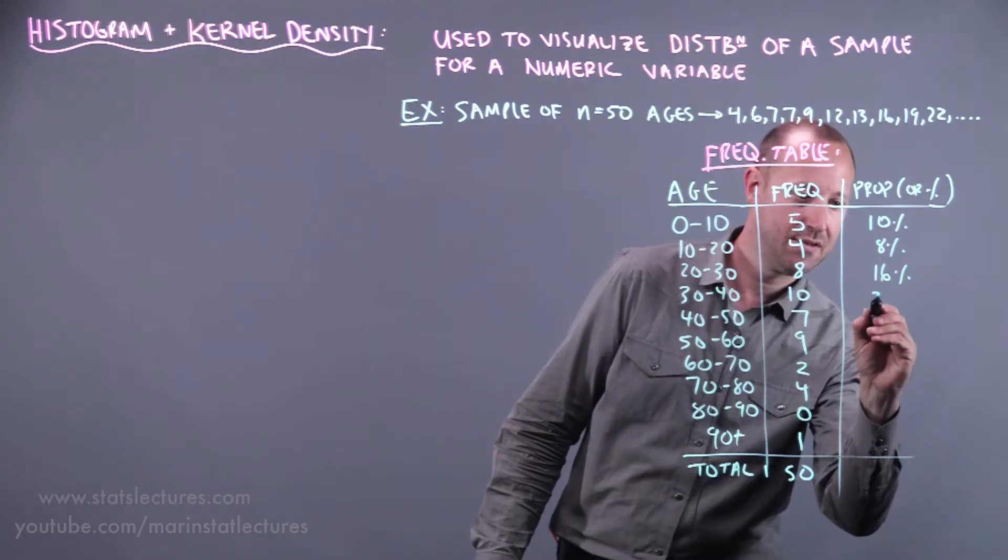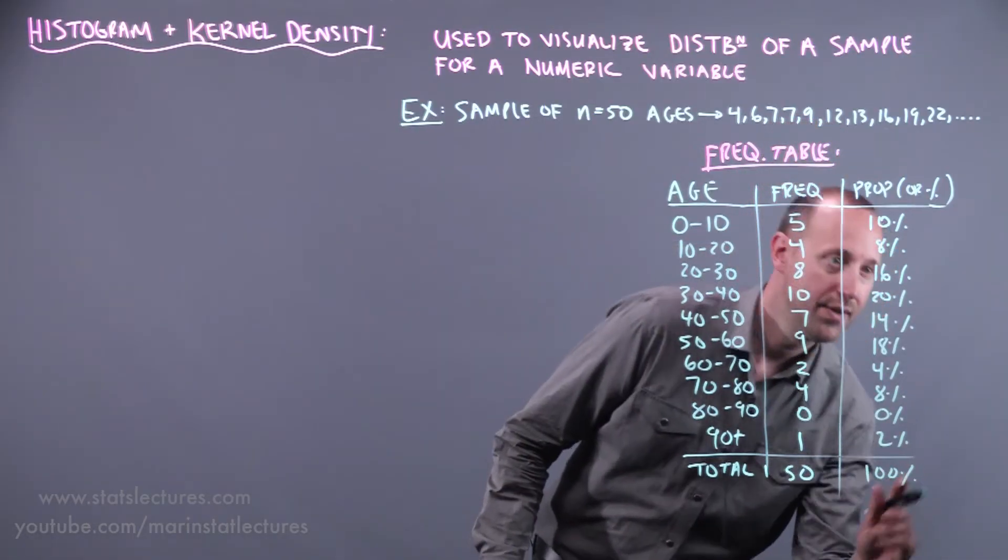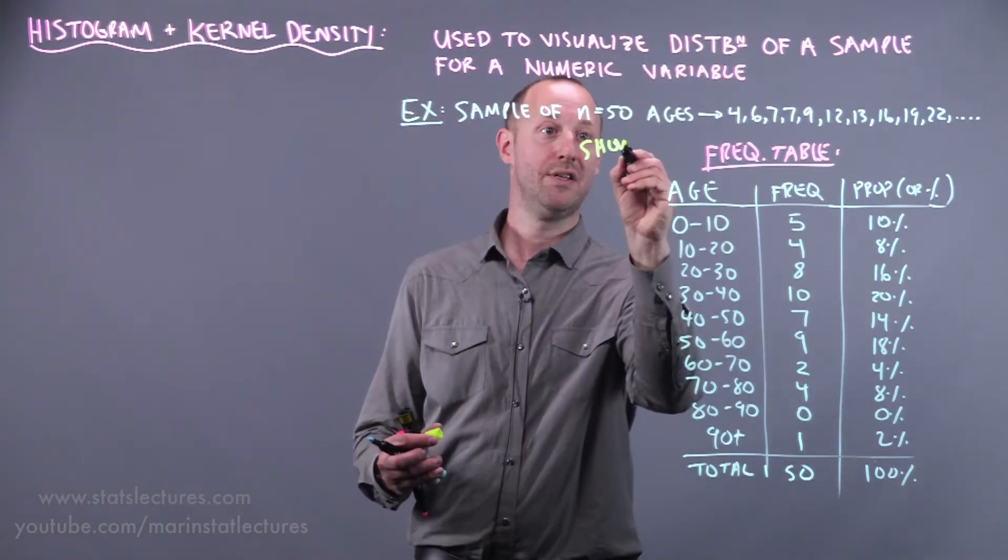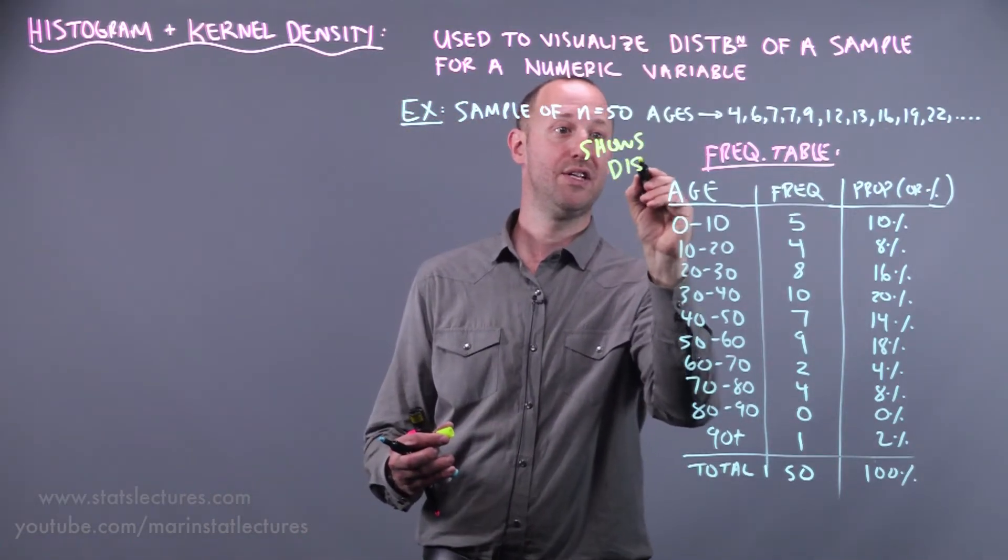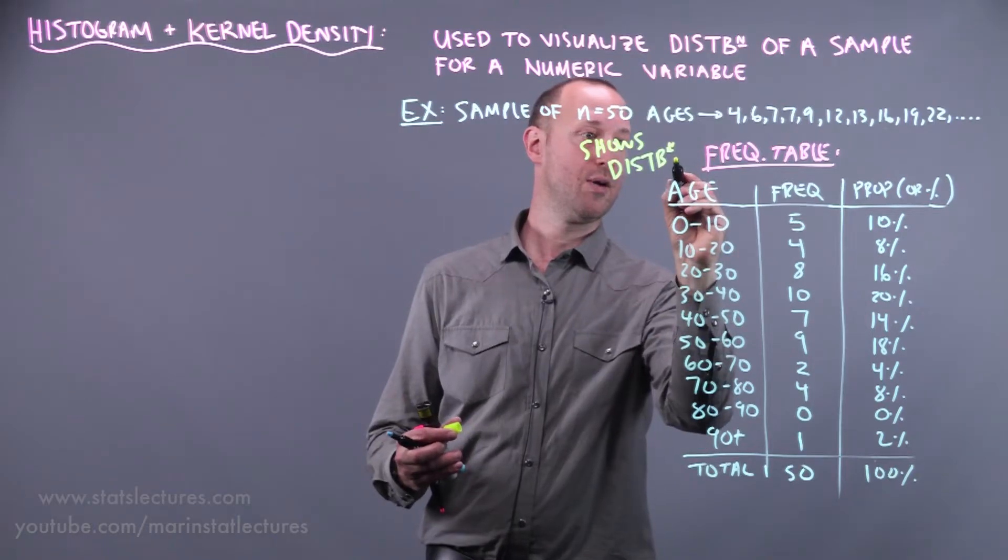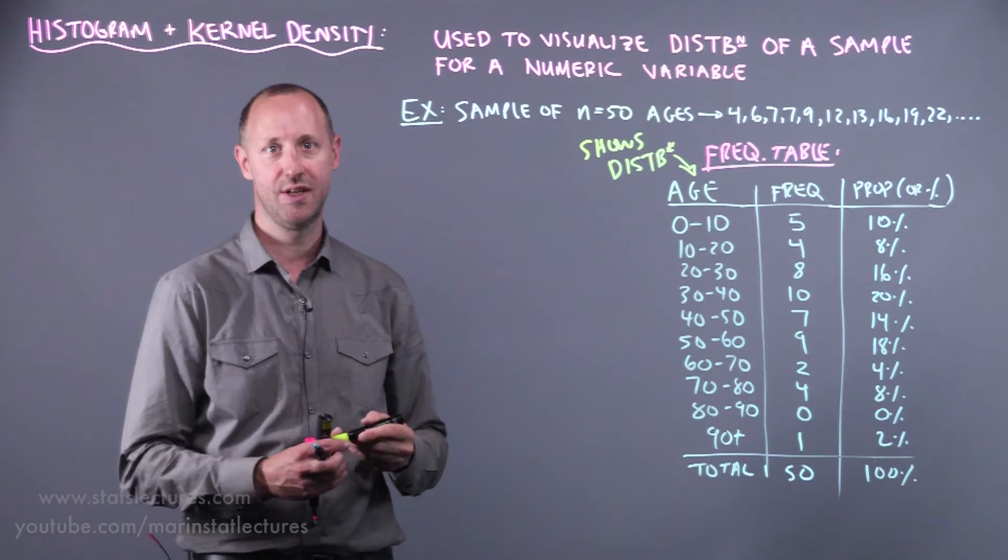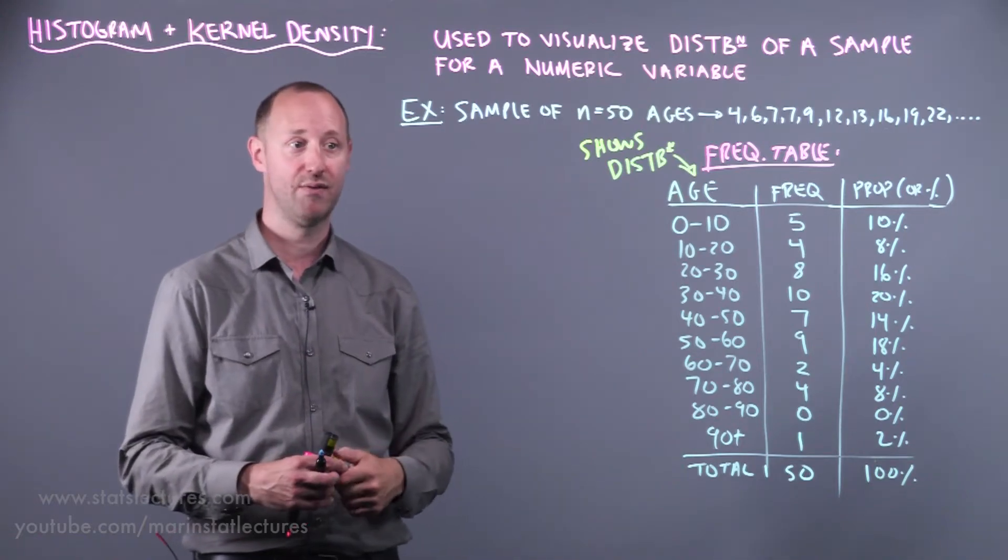16% for a total of 100%. As we said this keyword distribution, this shows the distribution for the variable age. So again how are people distributed amongst the different bins or categories that we've created.